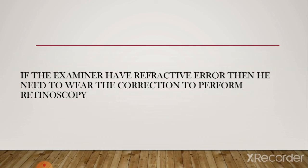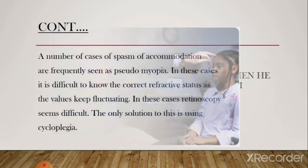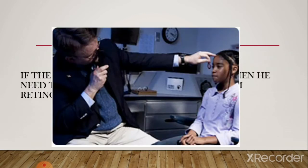If the examiner has a refractive error, they need to wear their proper correction while performing retinoscopy. Suppose you have myopia and are not properly corrected — while utilizing the patient's reflex, you need extra power to compensate for your own uncorrected refractive error. This ultimately leads to error in the final results. The examiner is always advised to wear their best-corrected vision glasses while performing retinoscopy if they have any refractive error.